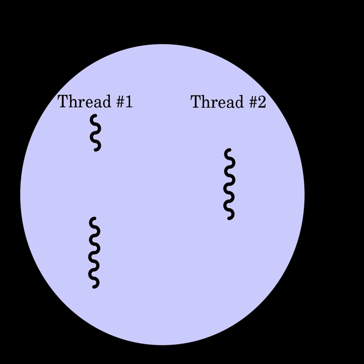On a multiprocessor or multi-core system, multiple threads can execute in parallel, with every processor or core executing a separate thread simultaneously. On a processor or core with hardware threads, separate software threads can also be executed concurrently by separate hardware threads.